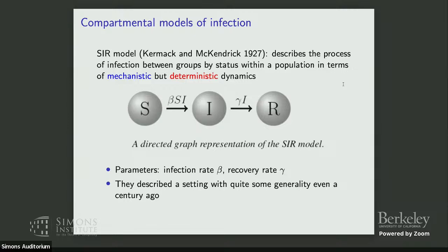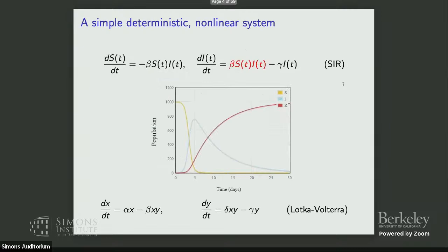When people say the Kermack-McKendrick model, they mostly colloquially refer to the simple model where there's a fixed parameter beta and a fixed parameter gamma that refer to rates of transmission and recovery. Even in the general case, everything was deterministic in the original treatment. In the simple case, we describe it by a system of ordinary differential equations: given an initial condition and certain parameter choices, you have fixed trajectories — nice smooth continuous curves over time. This is related to Lotka-Volterra predator-prey dynamics.